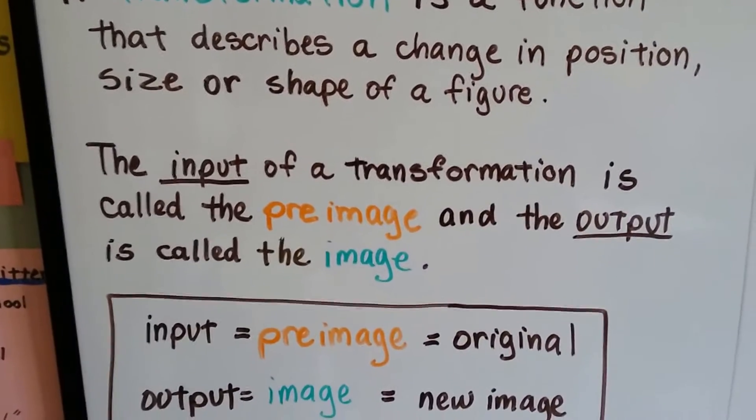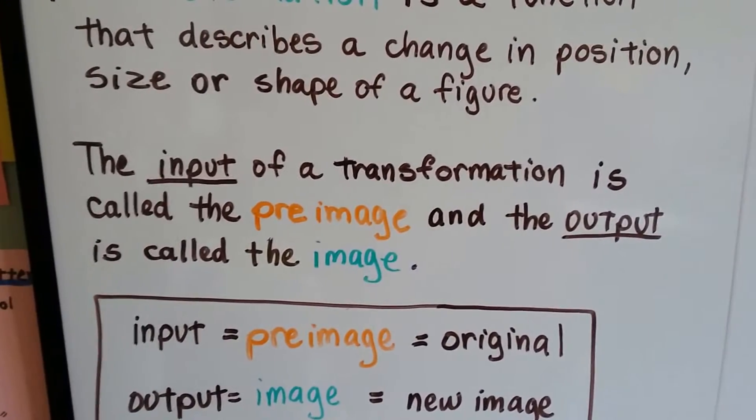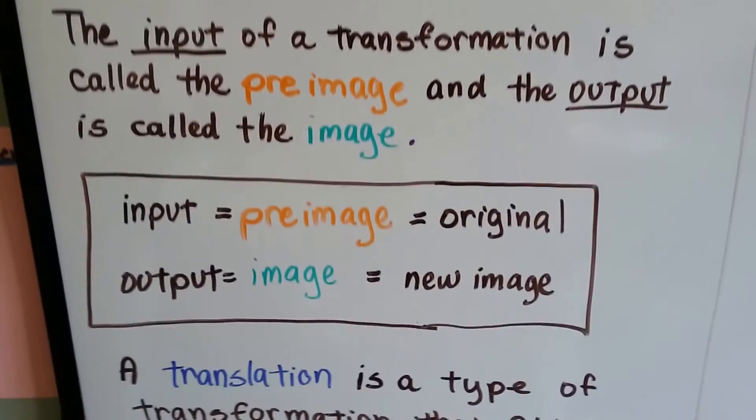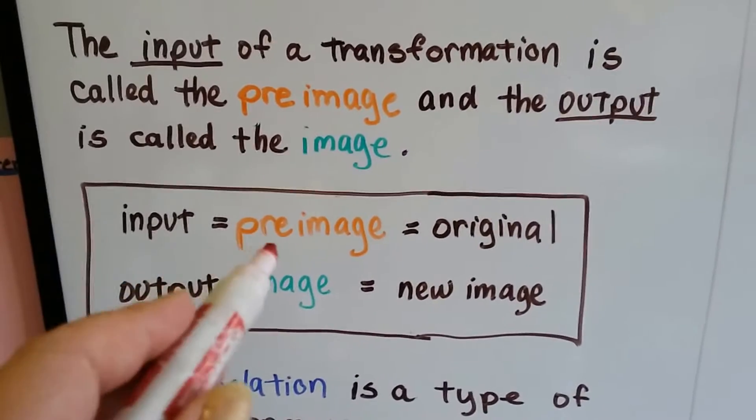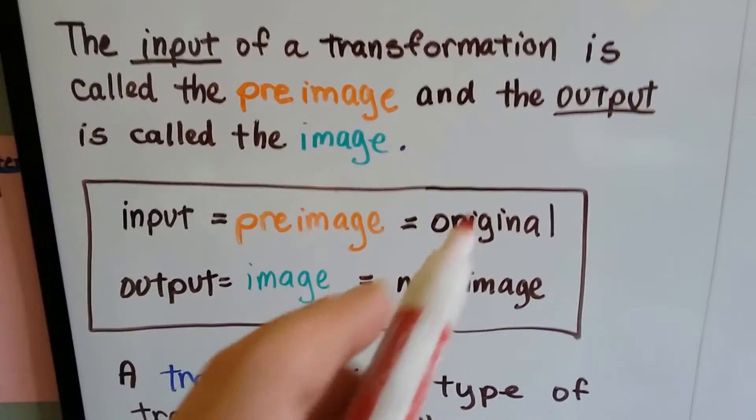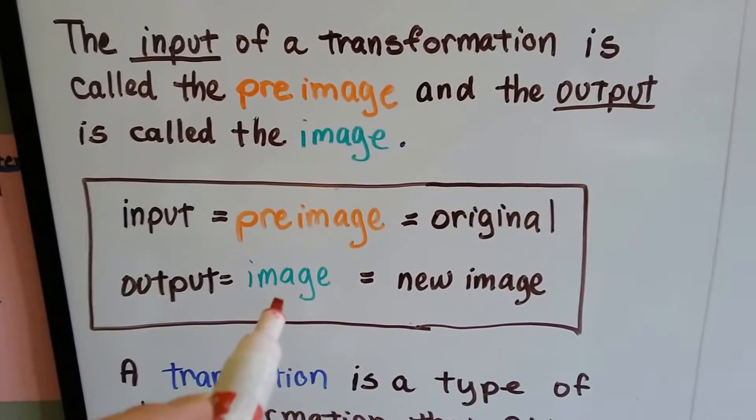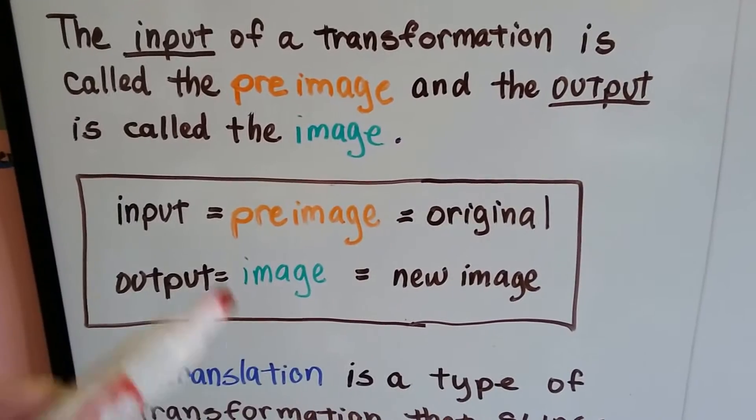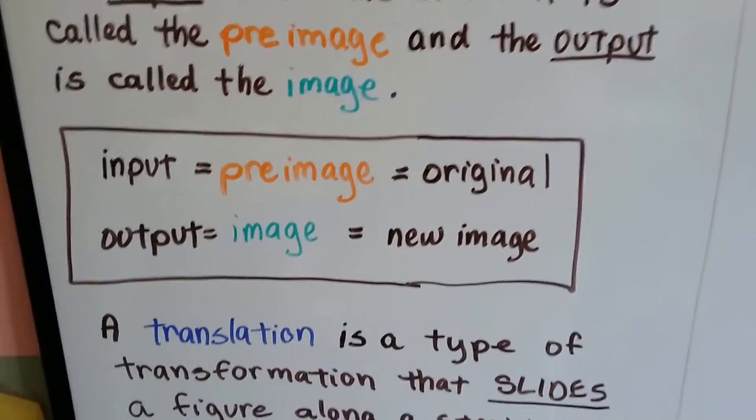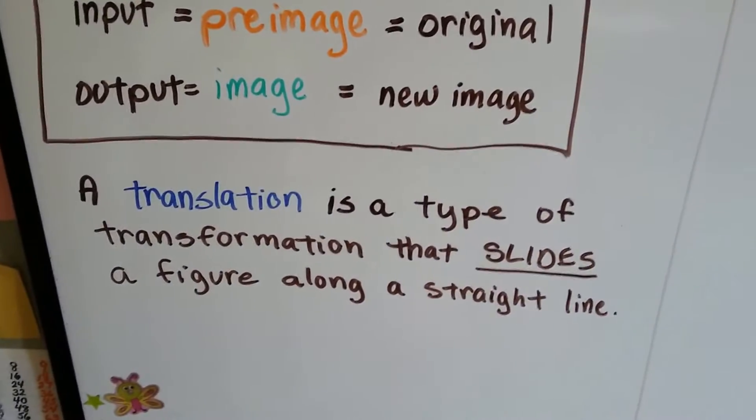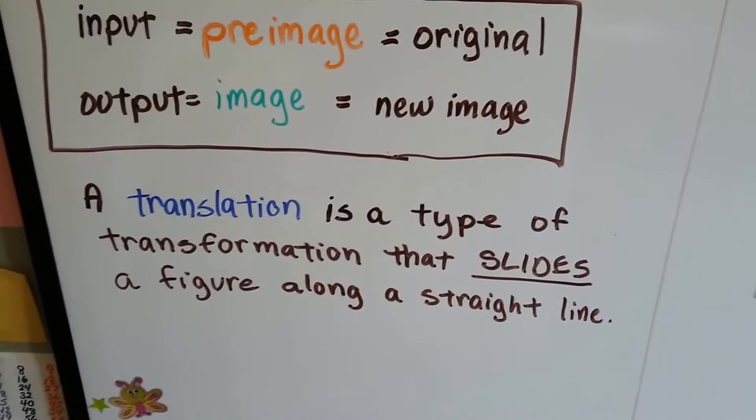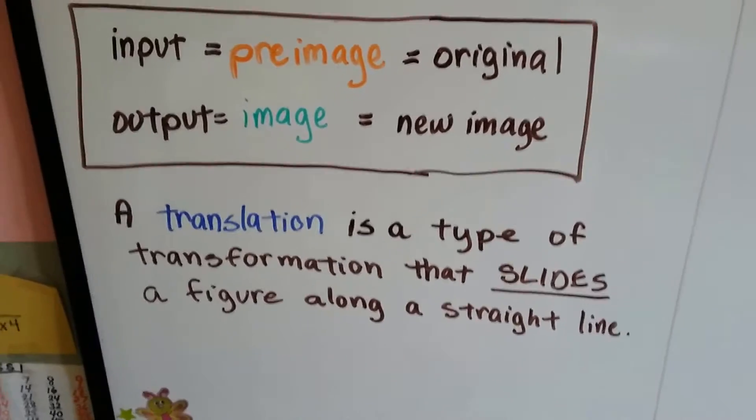The input of a transformation is called the pre-image, and the output is called the image. So input is the pre-image, that's the original image. The output is the image, it's a new image. So it goes from the pre-image to the image. A translation is a type of transformation that slides a figure along a straight line.